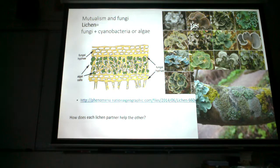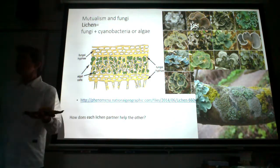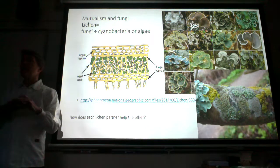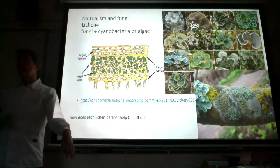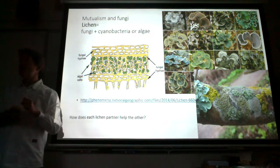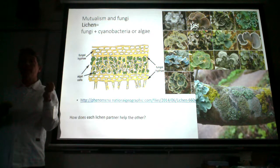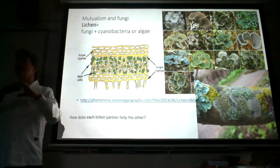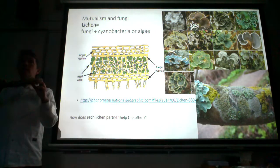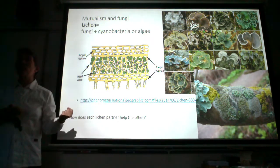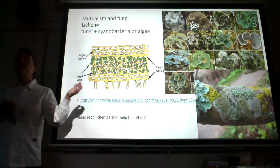Lichens are often early colonizers in harsh environments. If you were a photosynthetic algal cell or cyanobacterium and got blown into a crevice, you couldn't carry out photosynthesis — you need sunlight. One advantage of living with the fungi is that the fungi create a network to anchor the photosynthetic partner on the surface of a rock or tree to keep them in the sunlight. The fungi, with all their hyphae, also increase water absorption and mineral absorption and provide that for the photosynthetic partner.